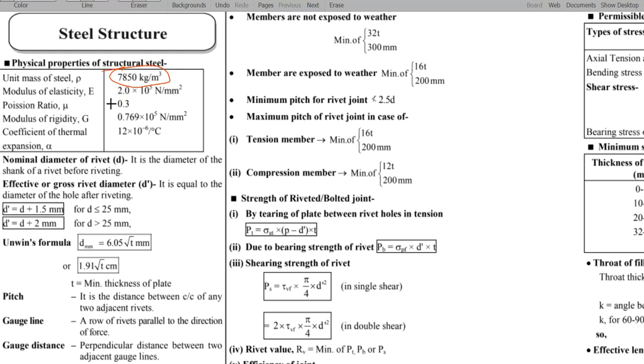Next, we have modulus of elasticity of steel, that is 2 into 10 to the power of 5 Newton per mm squared. Poisson ratios are 0.3. Modulus of rigidity is 0.769 into 10 to the power of 5 Newton per mm squared. Our coefficient of thermal expansion, which is nearly equal to the concrete, and that is 12 into 10 to the power of minus 6 per degree centigrade.